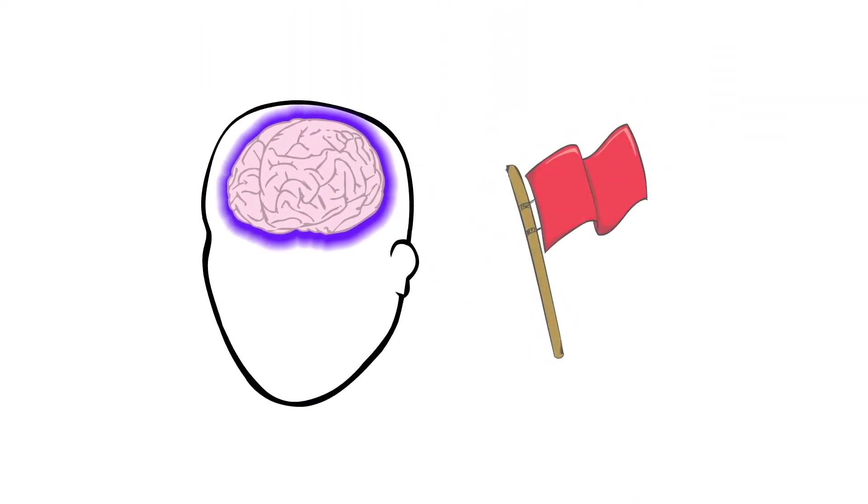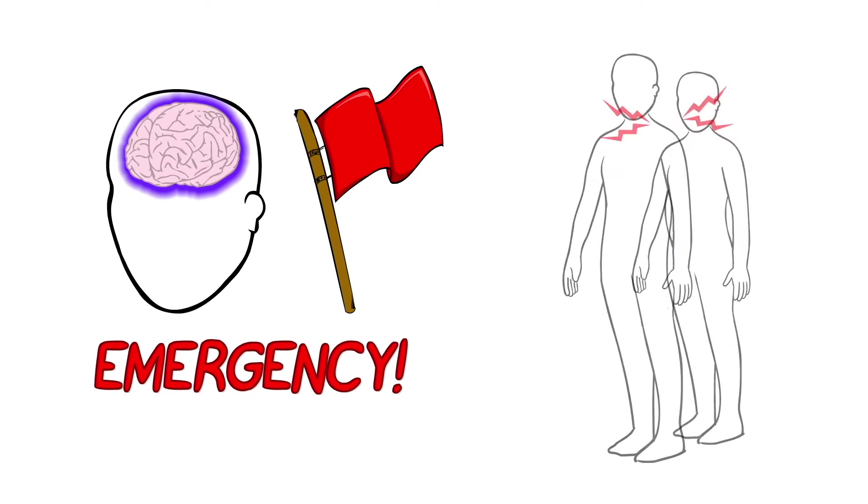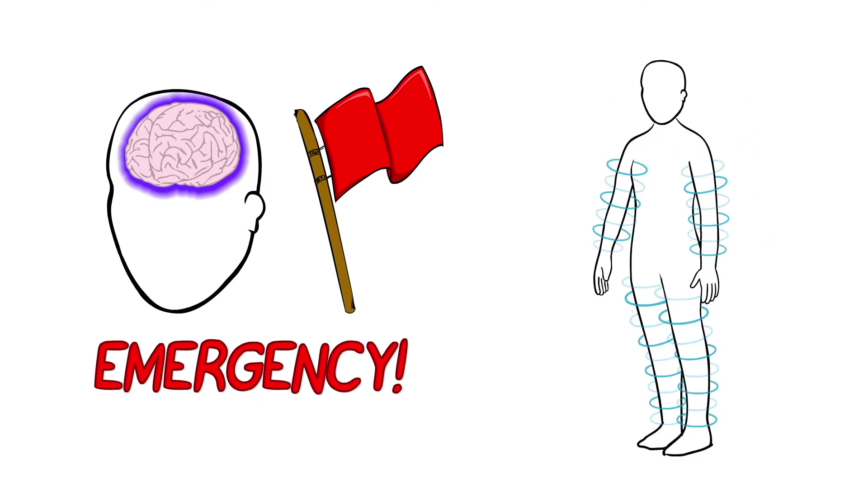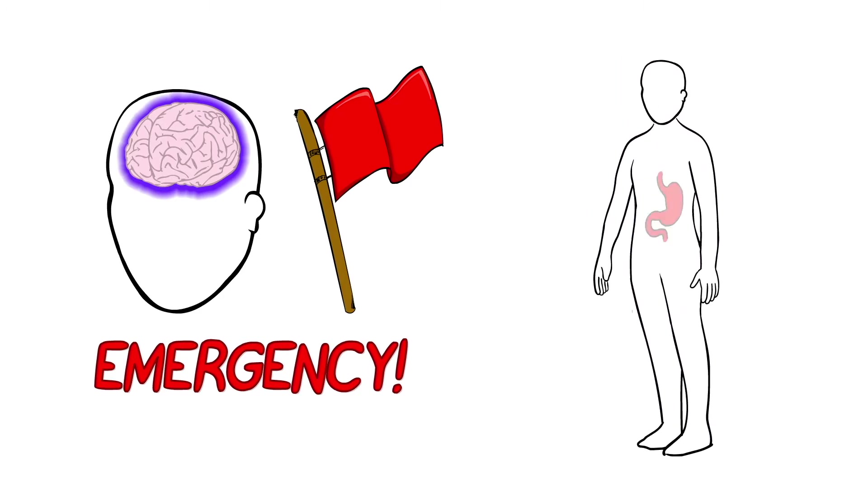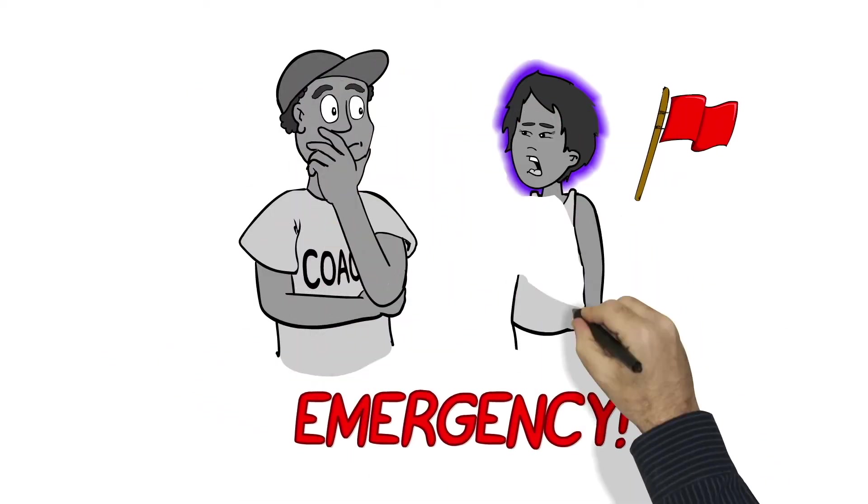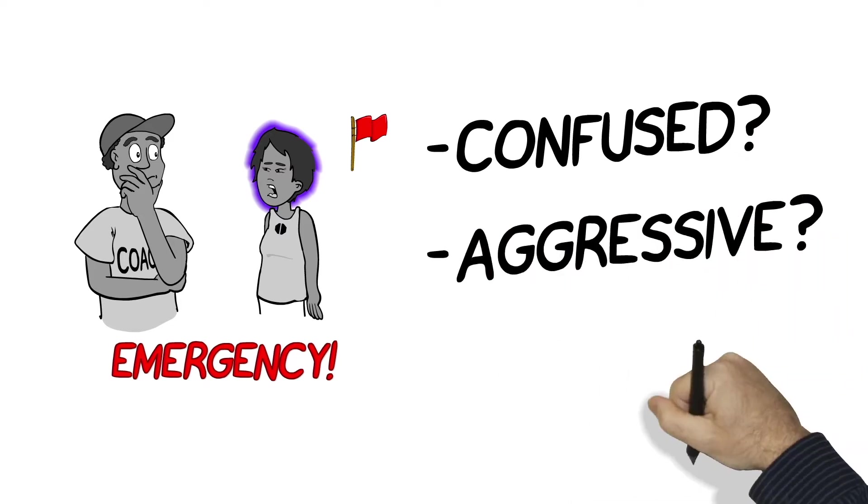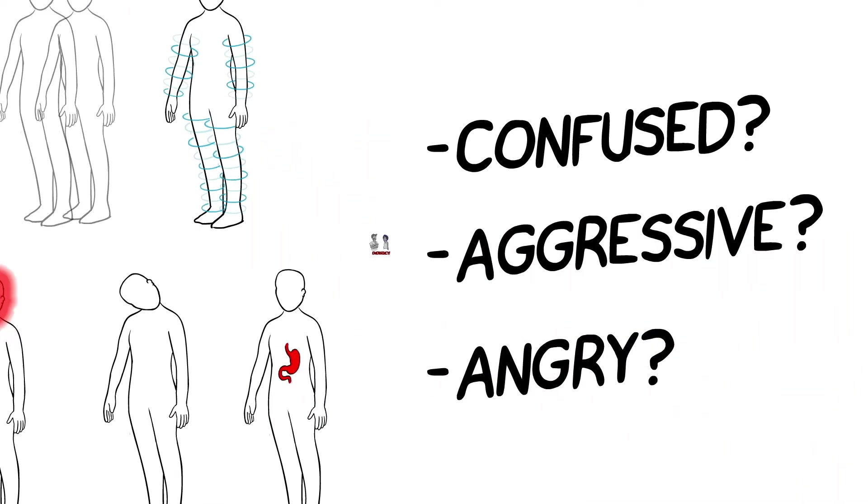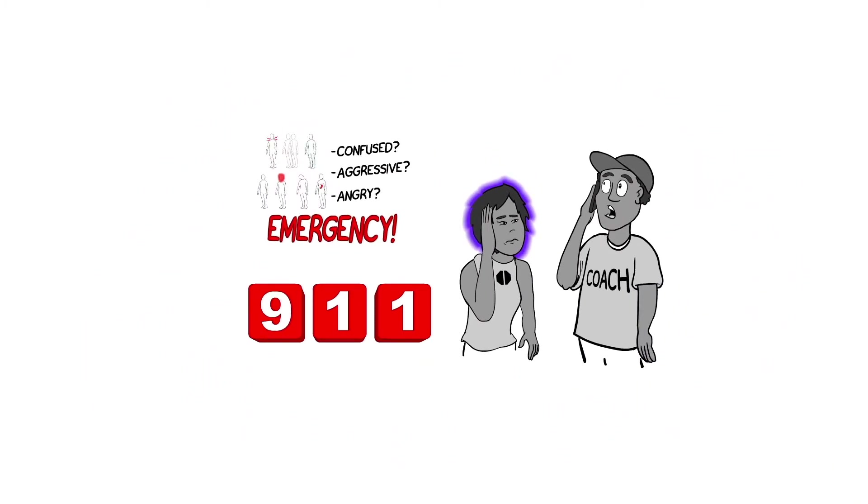The first things to check for are any red flags. These are signs and symptoms that might mean the injury is an emergency. Red flags include pain or tenderness in your neck, seeing double, weakness or tingling in your arms or legs, a really bad headache or a convulsion, loss of consciousness, or throwing up more than once. There are also red flags for how a person is behaving, like if the person becomes confused or keeps getting more and more aggressive or even angry. If these symptoms appear, then it's an emergency, and you or someone needs to call 911 right away.